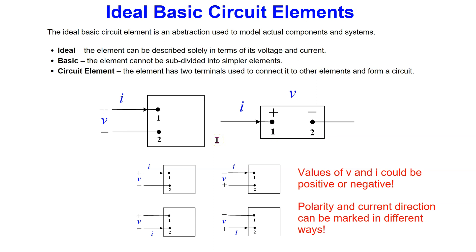Solving ideal basic circuit element problems can be slightly tricky because the voltage and current can have negative or positive values. Also, the voltage polarity and the current direction can be marked in different ways. Let's see how to handle such problems in a systematic manner which avoids mistakes.